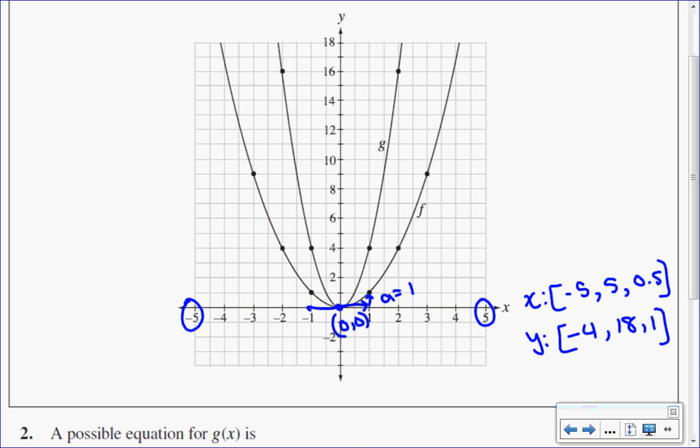I can see if I travel over one unit to the right I'm going up one unit, so I know a is positive one. You can check on this side, going left one unit, a is equal to one. This only works for the first point on either side of the vertex.